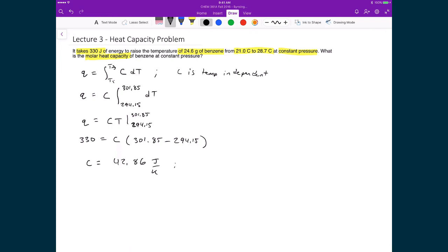And so, remember, this value is for exactly 24.6 grams of benzene. And the problem asked for the molar heat capacity. So, that means we have to take this number that we have right here, and we have to divide it by the number of moles of benzene, so that we can get the joules per Kelvin per mole, meaning how much energy do we have to put in per mole to raise it by 1 degree Kelvin.